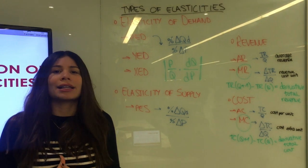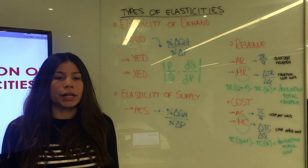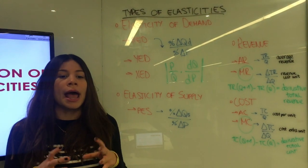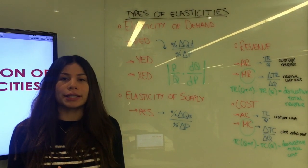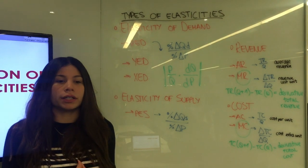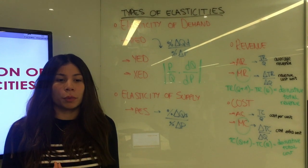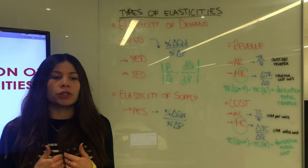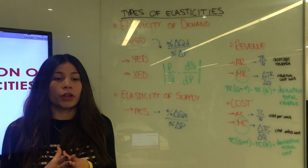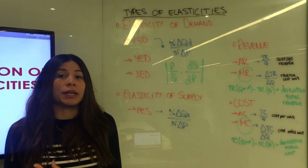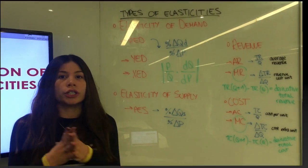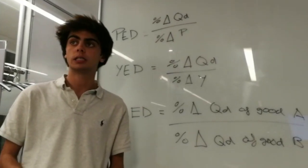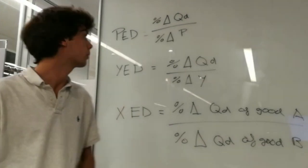Why is it used? Elasticity is important because it is used to determine how changes in price affect the quantity demanded by consumers. Understanding this relationship helps us to determine whether a price should be increased or decreased. We can distinguish three types of elasticity of demand.